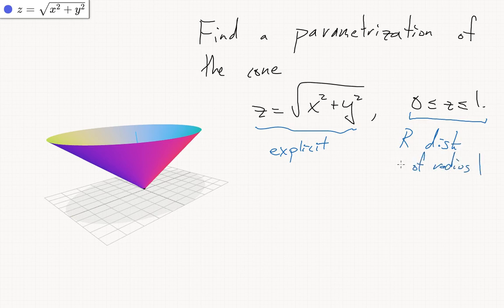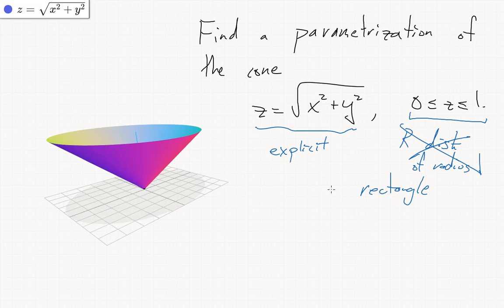The parameter domain would be a disk of radius 1, but we want our parameter domain to be a rectangle. To fix this, we'll use polar coordinates for this disk.